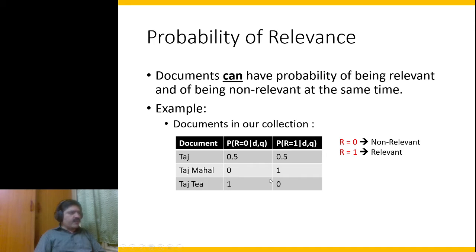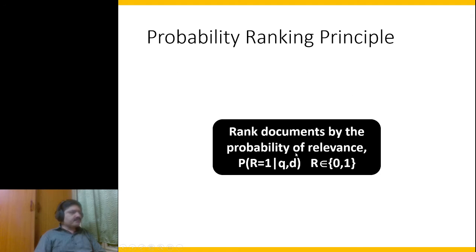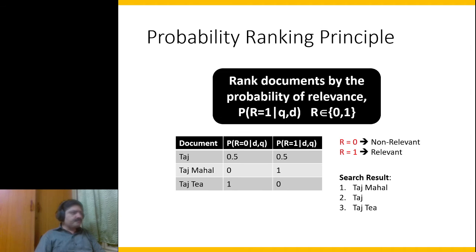We can use these scores to rank documents. According to the probability ranking principle, we rank documents by the probability of relevance. The highest scoring document is Taj Mahal, which gets first rank, then Taj, and finally Taj D.